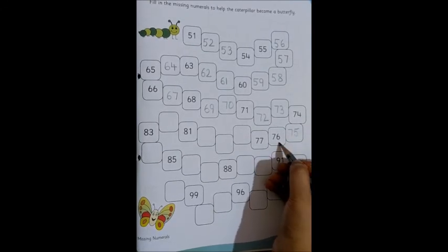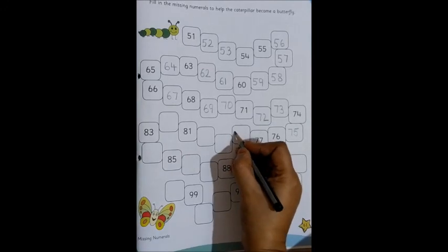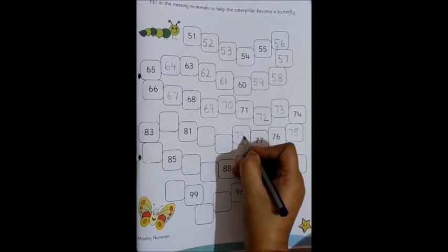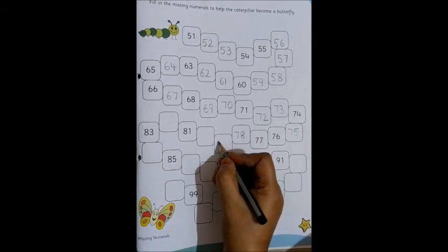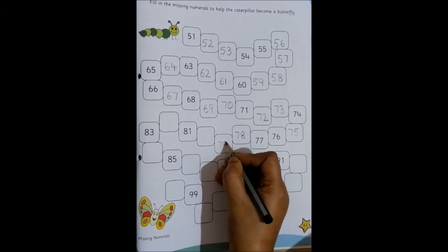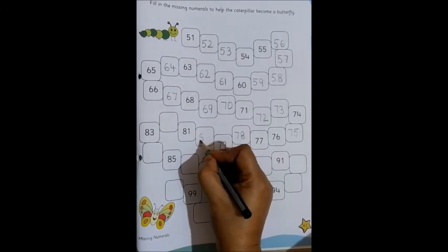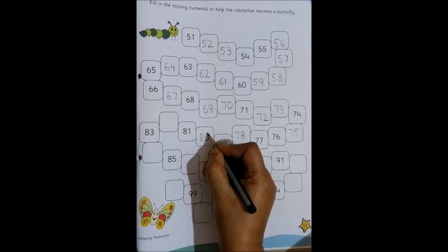75. We already know 76, 77 is there. Then what will come? 78, 79, 80.